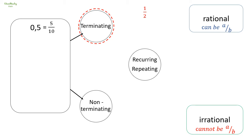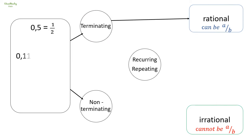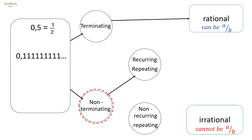Since 0.5 is terminating, it can easily be written as a fraction — 1 over 2 — making it a rational number. Now let's look at 0.1111...: this number goes on and on without stopping and does not come to an end after the decimal comma. We say this number is non-terminating, and a non-terminating number can either be repeating or not repeating.